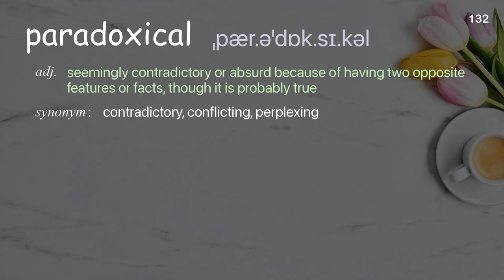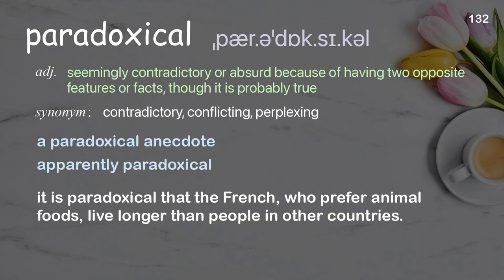Paradoxical. Seemingly contradictory or absurd because of having two opposite features or facts, though it is probably true. Examples: a paradoxical anecdote, apparently paradoxical. It is paradoxical that the French, who prefer animal foods, live longer than people in other countries.